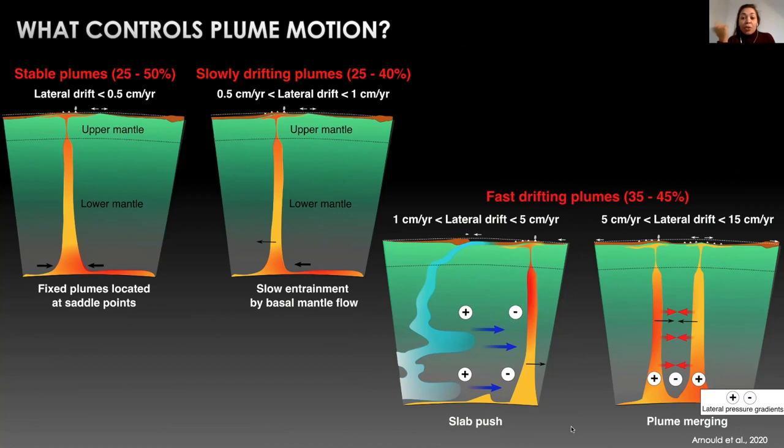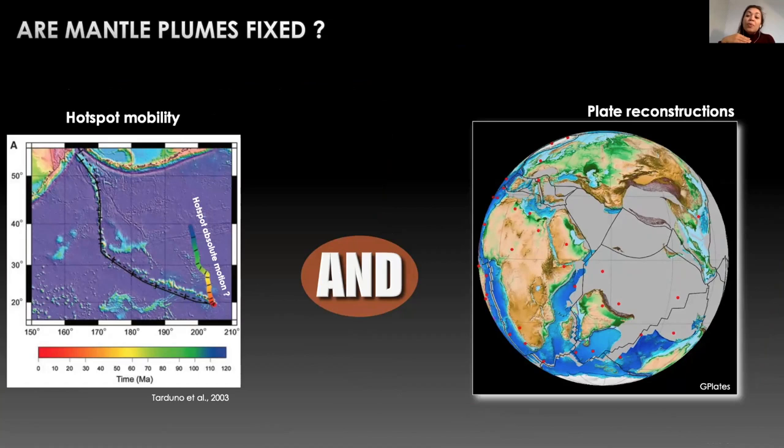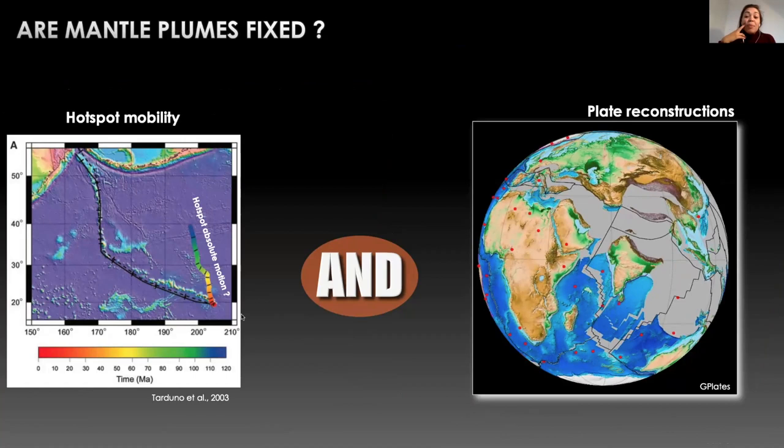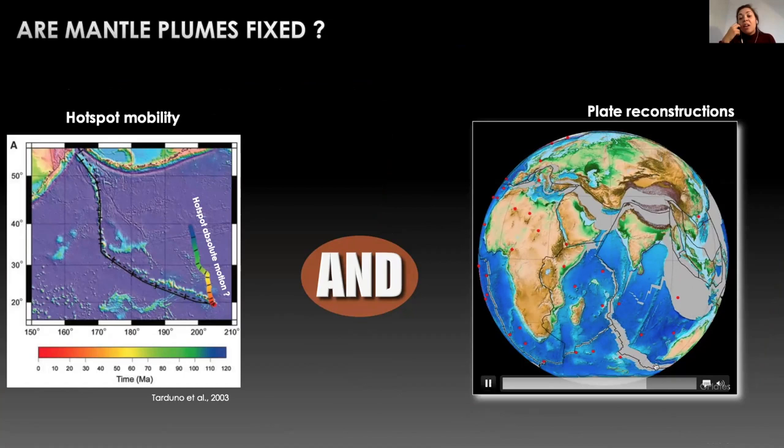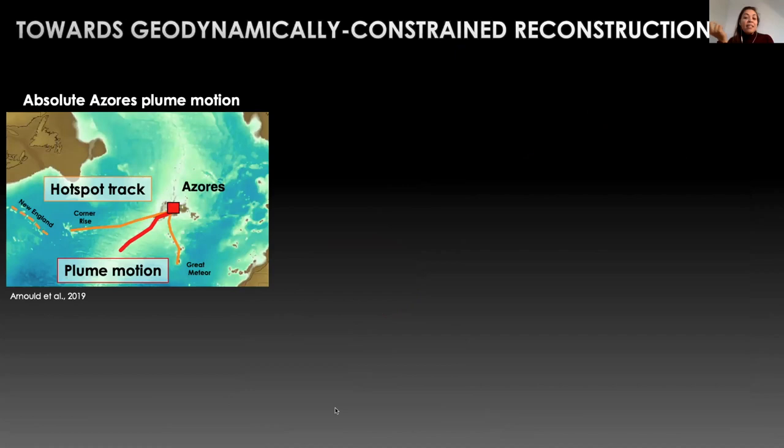With this study we showed that depending on the nature of their interactions with plate tectonics or with mantle convection, mantle plumes can behave differently. By choosing them carefully we are still able to use some of them as an absolute reference frame.